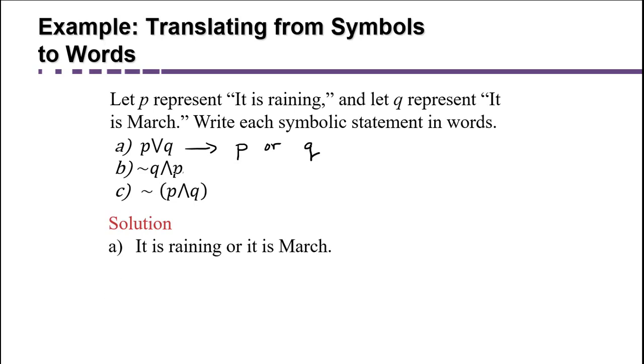Now for part B, we have that tilde, that little squiggle that represents a negation. In words, we would say NOT Q and then an upside-down V means AND, not Q and P. So Q didn't happen and P happened. You can think of it that way. So in this case, since Q is the statement it is March, we're going to say it's the negation of that, which is it is not March and P is raining. It is not March and it is raining.